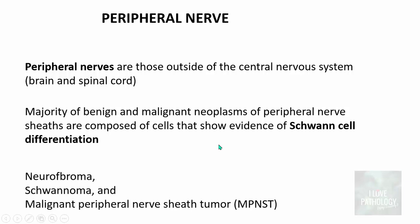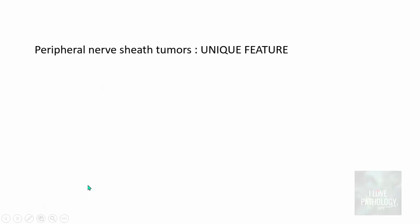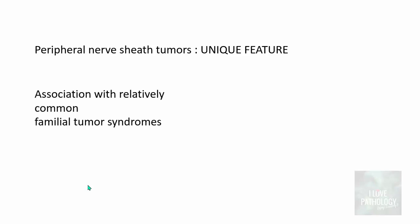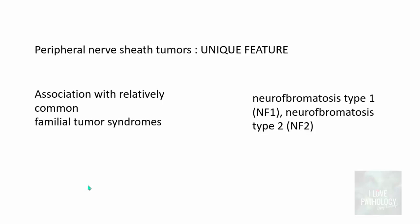For example, these are the neurofibromas, the schwannoma, and malignant peripheral nerve sheath tumor. In today's tutorial we'll be discussing neurofibroma and schwannoma, which are the benign peripheral nerve sheath tumors. One unique feature about peripheral nerve sheath tumors is their association with relatively common familial tumor syndromes like neurofibromatosis type 1 or neurofibromatosis type 2.